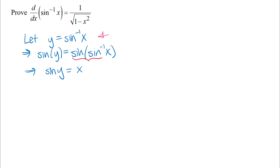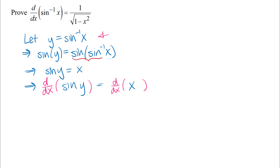We're going to use implicit differentiation here. I'm going to apply the differential operator d/dx to both sides of the equation. On the left, differentiating implicitly, the derivative of sine is cosine, and then times the derivative of what's inside — giving cos(y)·(dy/dx). The derivative on the right side is just 1, and then I can solve for dy/dx.